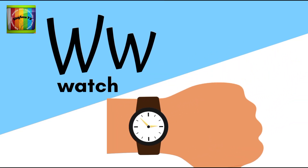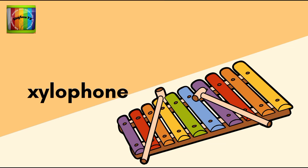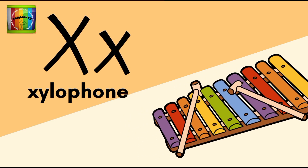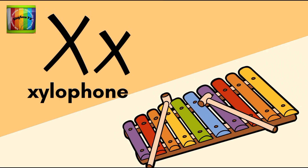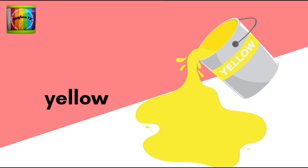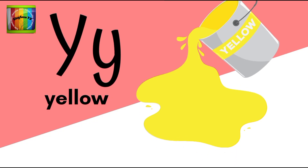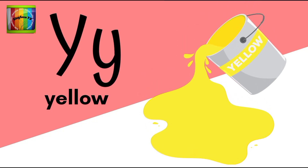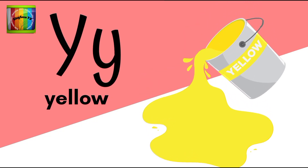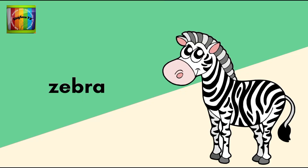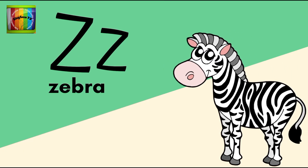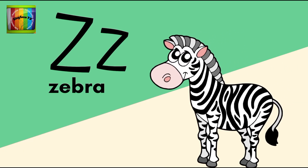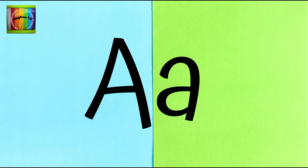W is for watch. W, watch. X is for xylophone. X, xylophone. Y is for yellow. Y, yellow. Z is for zebra. Z, zebra.